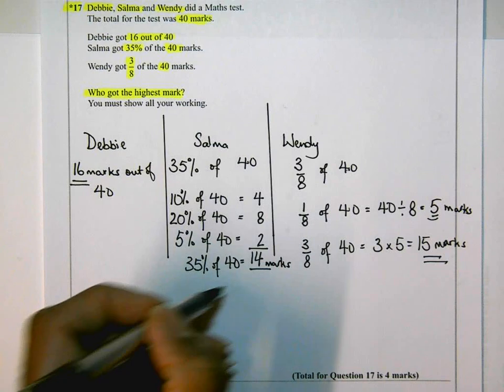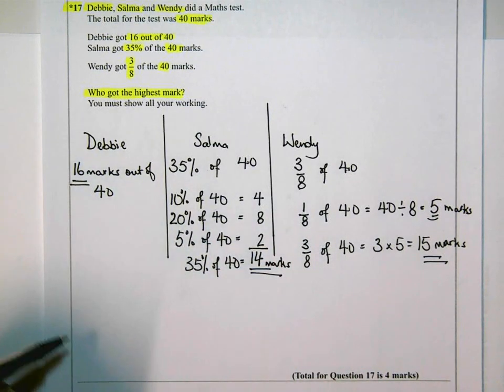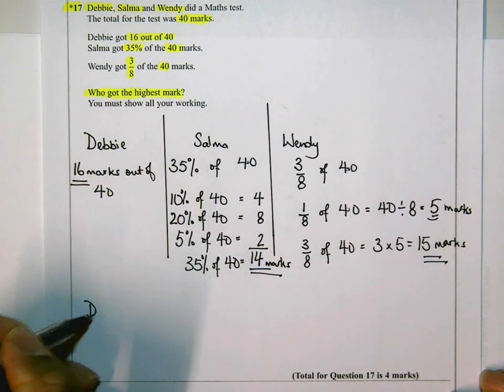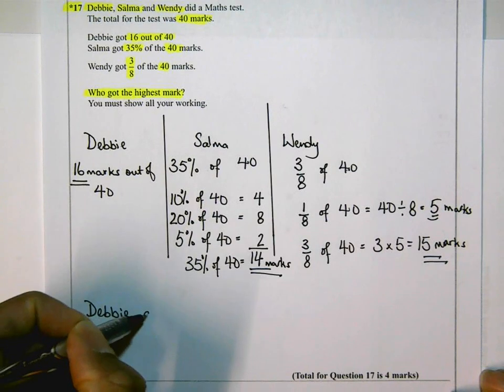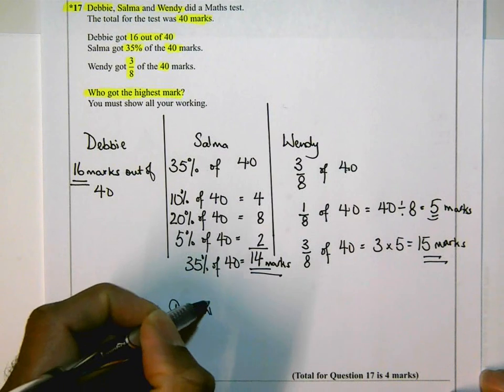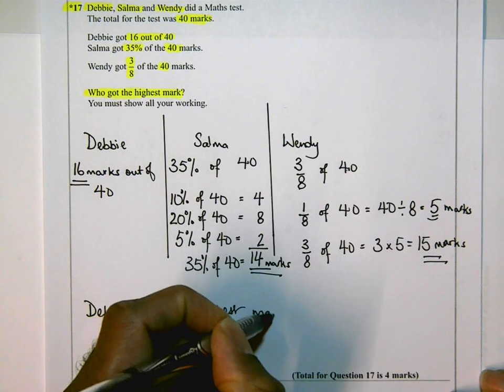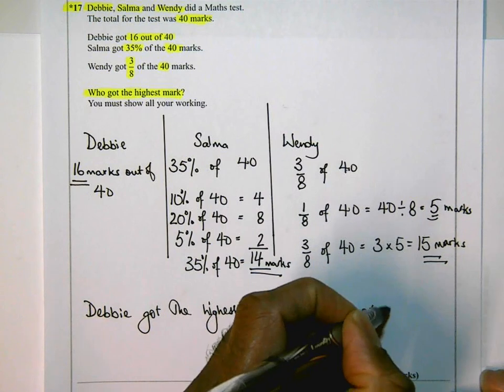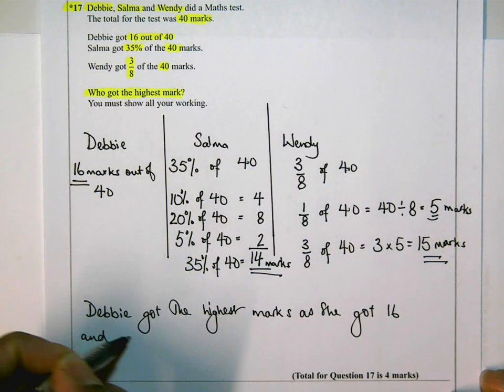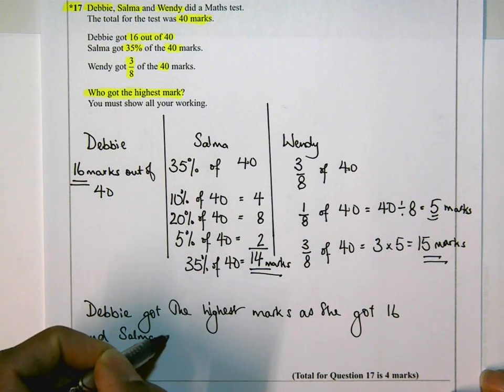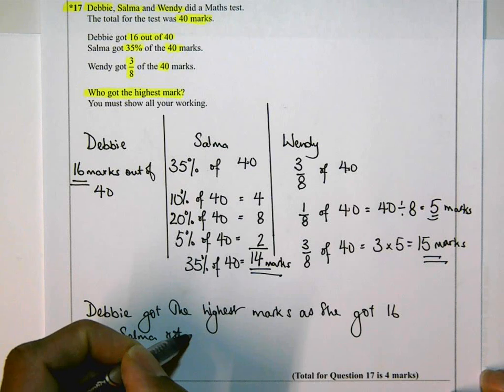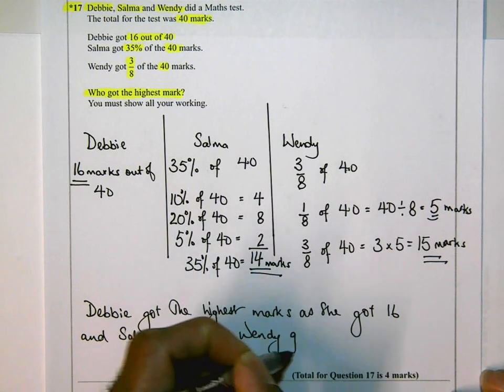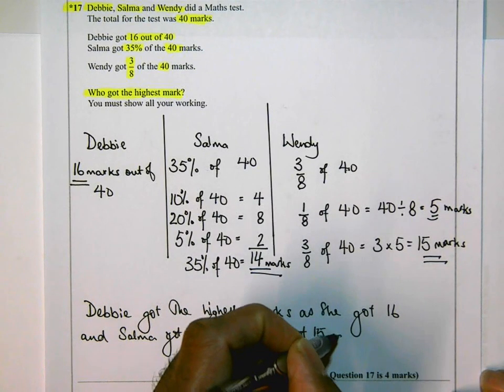Wendy got 15, Salma got 14, and Debbie got 16. So the question is, who got the highest marks? The answer is, Debbie got the highest marks as she got 16 marks, and Salma got 14, and Wendy got 15 marks. I should have put 16 marks there.